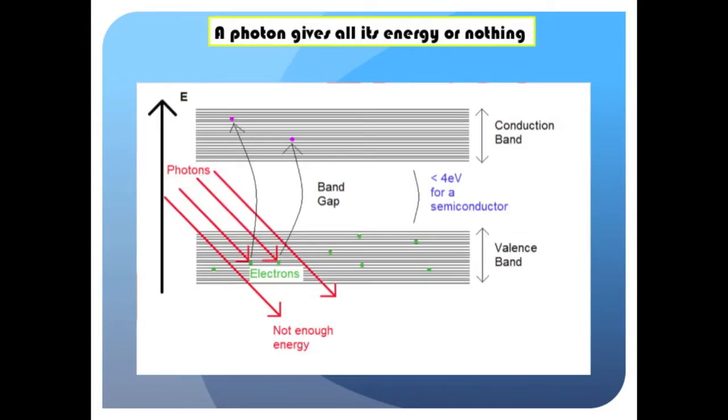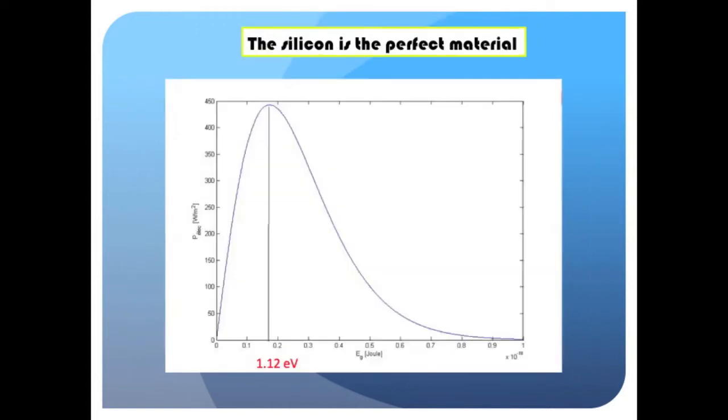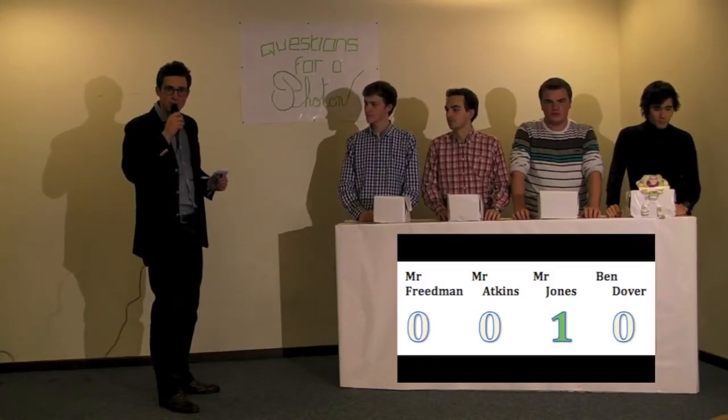If the energy of the photon was too low to create an electron hole pair, it will go through the material. That's why some materials are transparent. Silicone has a band gap energy of 1.14 electron volts, which actually maximizes the production of electrical energy as you can see in this graphic. And now, the second question.